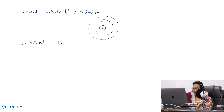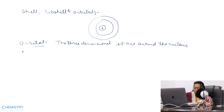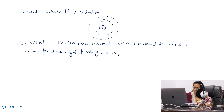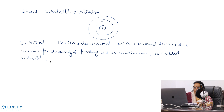An orbital is the three-dimensional space around the nucleus where the probability of finding an electron is maximum. This region is called an orbital.